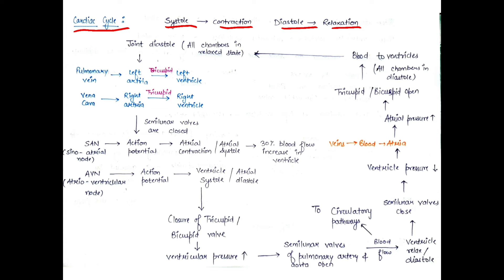First, every chamber is in a relaxed state — this is called joint diastole. The pulmonary veins and vena cava bring oxygenated and deoxygenated blood to the left atrium and right atrium respectively. Blood flows from the right atrium to the right ventricle through the tricuspid valve, and from the left atrium to the left ventricle through the bicuspid valve. The semilunar valves are closed. The SA node generates an action potential.